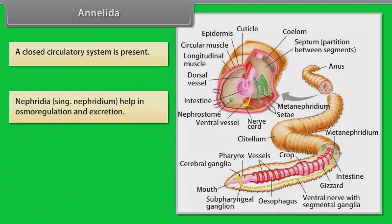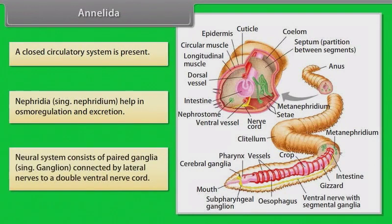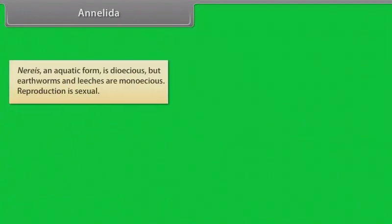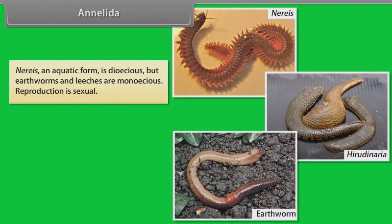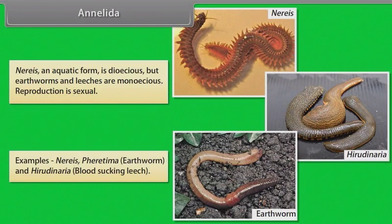Nephridia (singular: nephridium) help in osmoregulation and excretion. The neural system consists of paired ganglia (singular: ganglion) connected by bilateral nerves to a double ventral nerve cord. The aquatic form Nereis is dioecious, but earthworms and leeches are monoecious. Reproduction is sexual. Examples: Pheretima, that is earthworm, and Hirudinaria, that is blood-sucking leech.